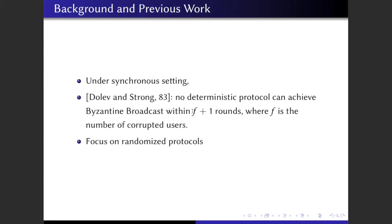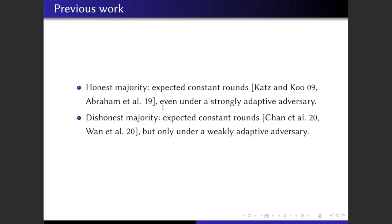Under the synchronous model, Dolev and Strong showed that no deterministic protocol can achieve Byzantine Broadcast in less than f plus 1 rounds. Here f is the number of corrupted users. Therefore, we focus on randomized protocols. If we consider randomized protocols, then there were some beautiful results.